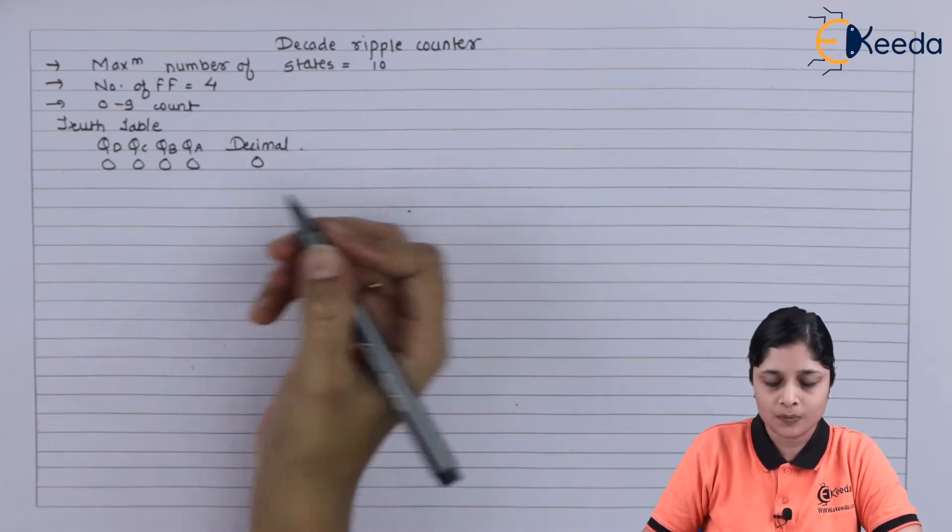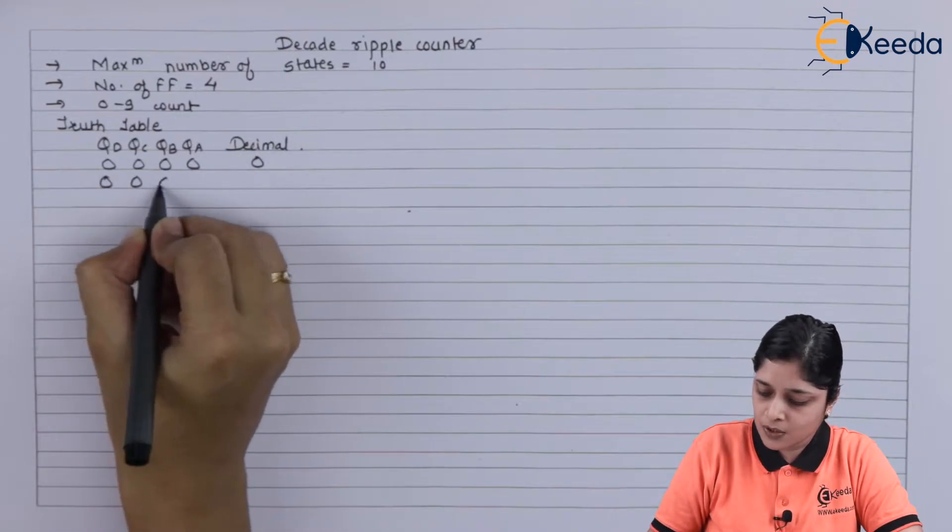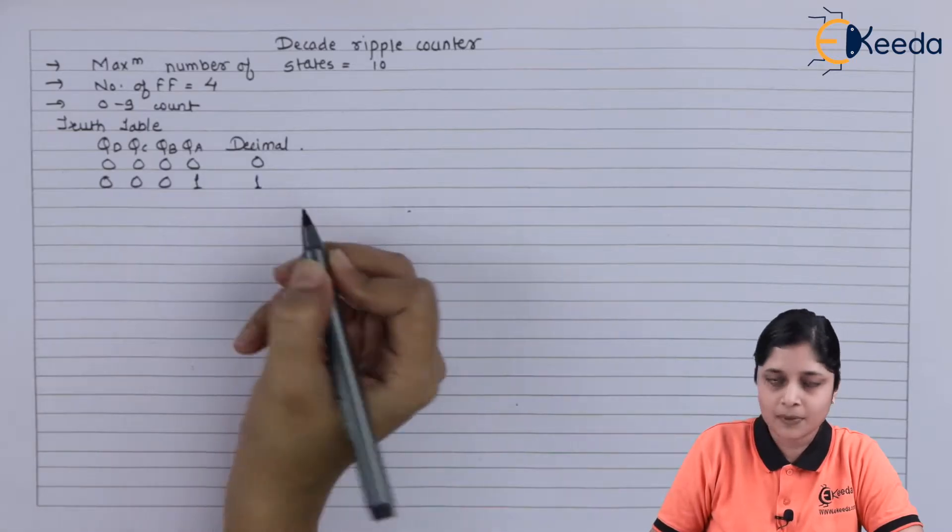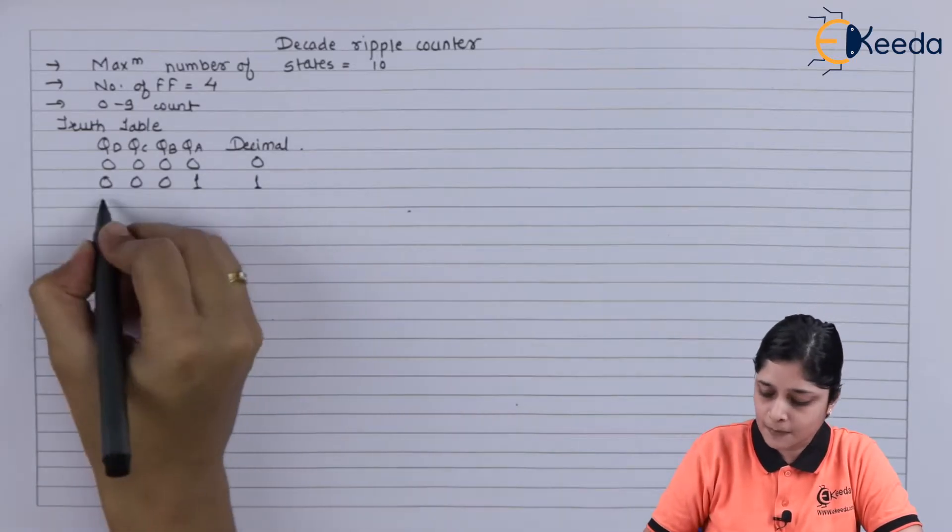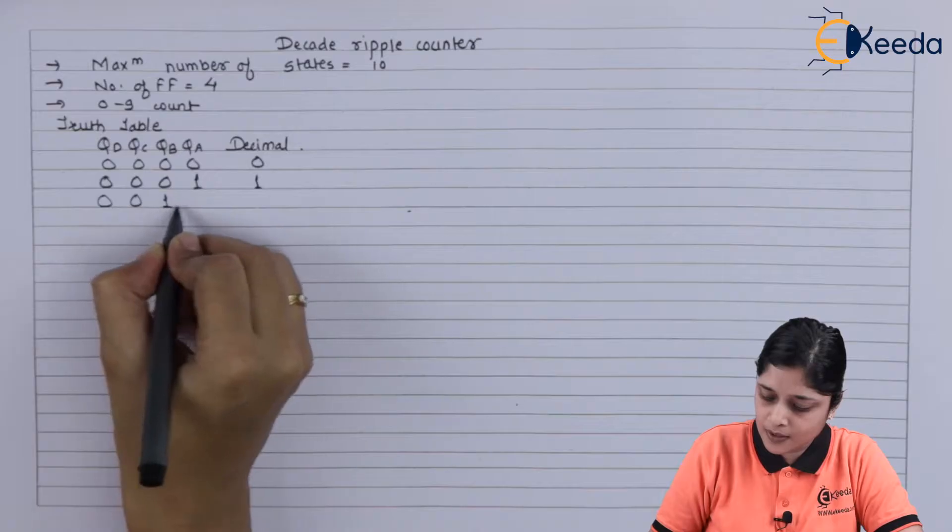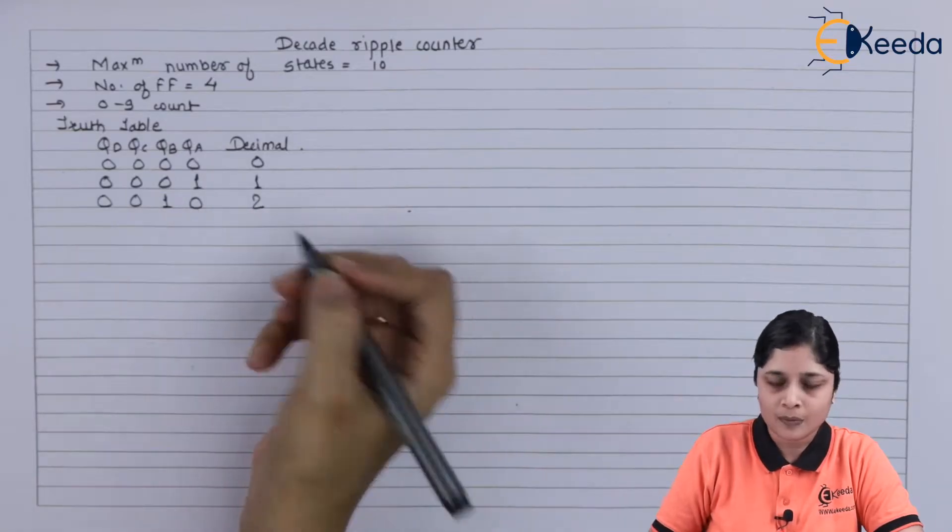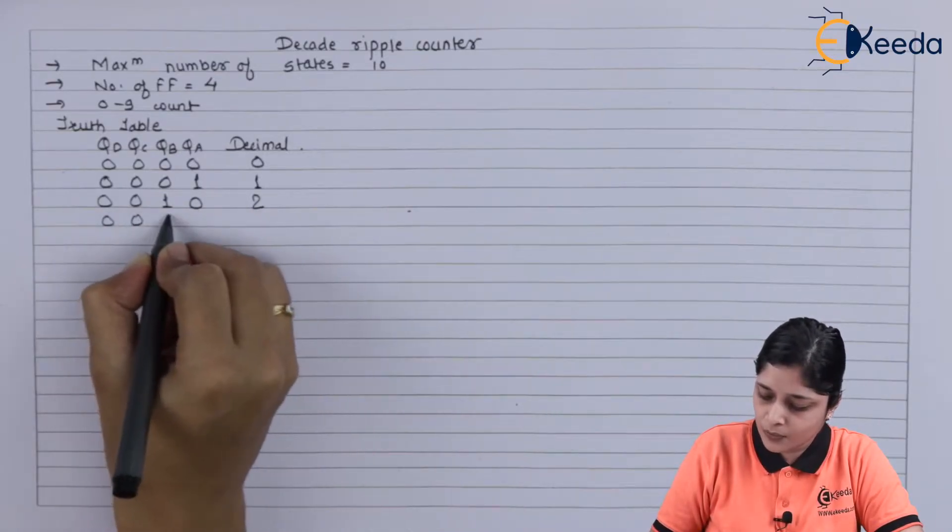have decimal 0. 0001, we have decimal 1 for counting purpose. Then 0010, we have 2. After that, 0011